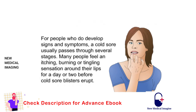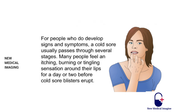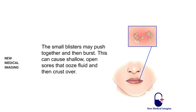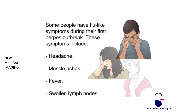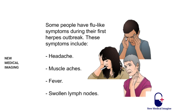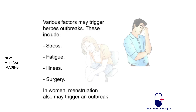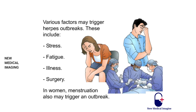For people who do develop symptoms, a cold sore passes through several stages. Many people feel an itching, burning, or tingling sensation around their lips for a day or two before blisters erupt. The blisters may push together, burst, and cause shallow open sores that ooze fluid and crust over. Some people have flu-like symptoms during their first herpes outbreak, including headache, muscle aches, fever, and swollen lymph nodes. Various factors may trigger herpes outbreaks, including stress, fatigue, illness, surgery, and in women, menstruation.